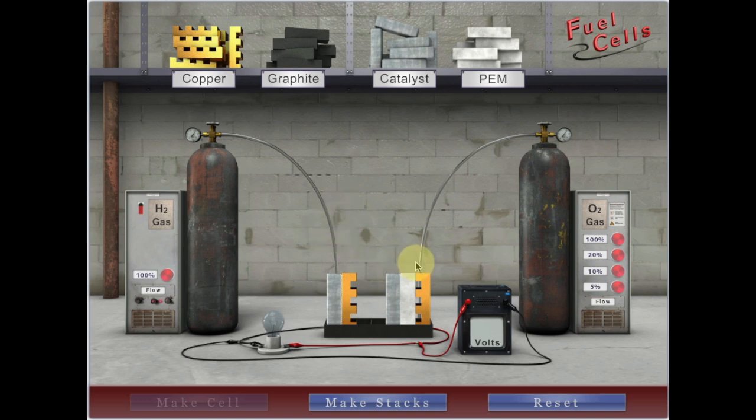After your cell is built correctly, test out which hydrogen and oxygen combination will produce the highest voltage. Press the red button on the hydrogen tank controller and one of the red buttons on the oxygen tank controller to allow gases to flow into the cell at various concentrations.